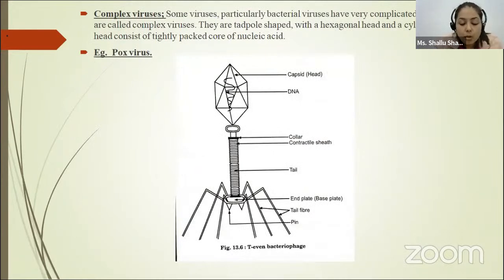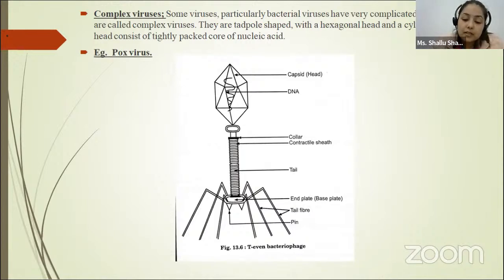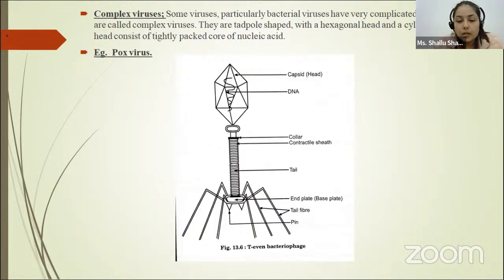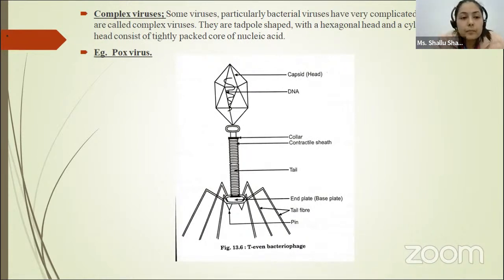The fourth type is complex virus. Some viruses, particularly bacterial viruses, have very complicated structures and are called complex viruses. This type of capsid is neither helical nor polyhedral in shape. They are thread-pole shaped with a hexagonal head and a cylindrical tail. The head consists of a tightly packed core of nucleic acid — either DNA or RNA — and a collar, contractile sheath, tail, end plate, and tail fiber pins are also present. An example of complex virus is pox virus.